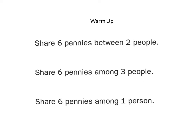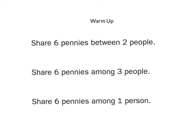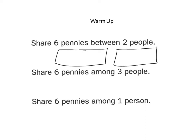I would go ahead and first draw my two people and then put my six pennies in there — one for each person, going up to six. So if you shared six pennies between two people, they would each get three.